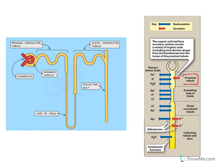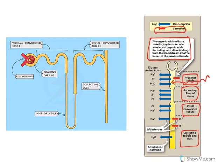The four important zones are: proximal tubule, ascending loop of Henle, distal convoluted tubule, and collecting duct. Organic acids, bases, and diuretic drugs enter the nephron through the proximal tubule via secretion. From the proximal tubule, the body reabsorbs glucose, amino acids, sodium, potassium, and water. From the ascending loop of Henle, sodium, potassium, and chloride are reabsorbed.